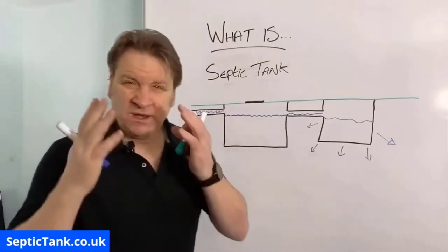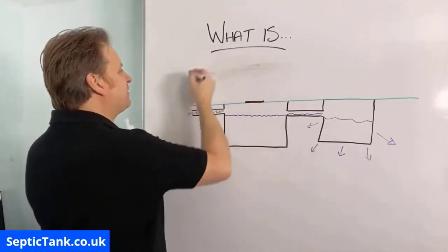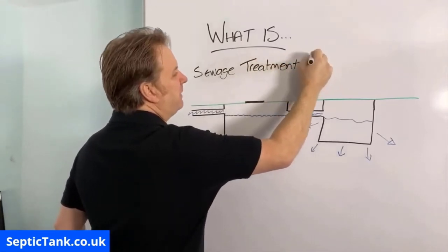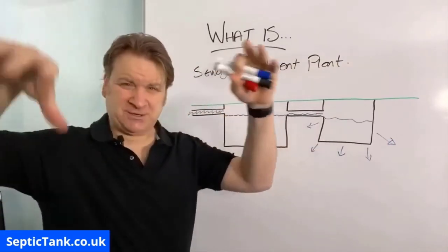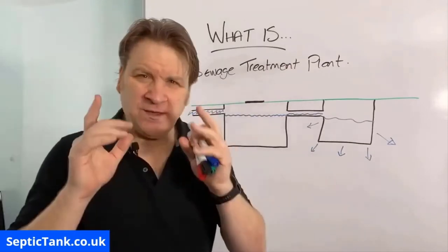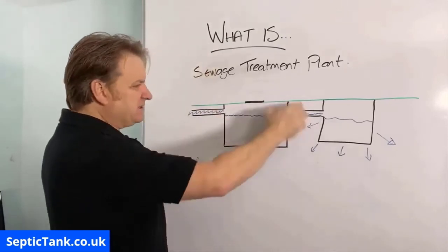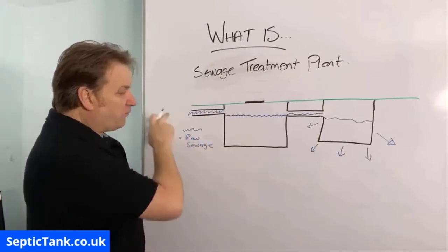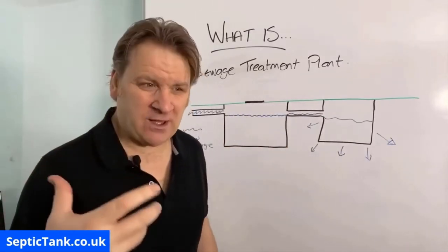Next question: what is a sewage treatment plant? With a cesspool and a septic tank, all of this is raw sewage going in. With a cesspool it's raw sewage, with a septic tank you've got raw sewage going into your soak away and into the soil - as it travels through the soil, that sewage is treated. But with a treatment plant, it's different.